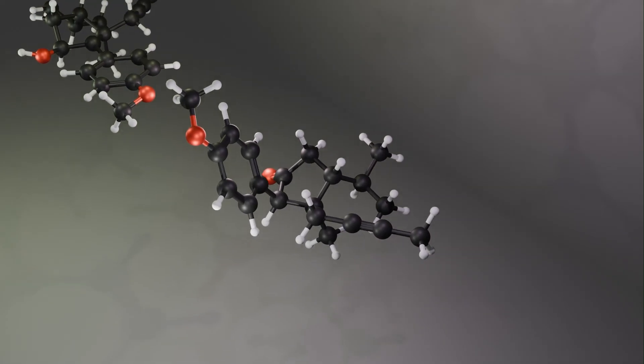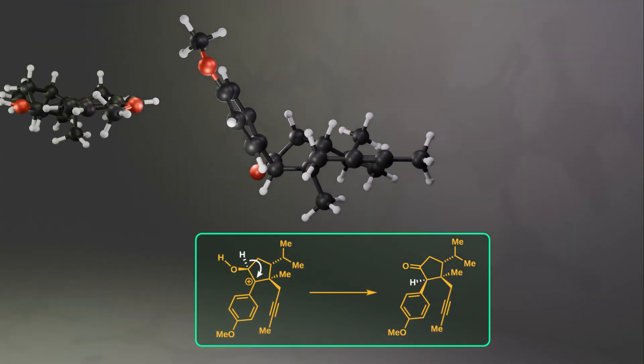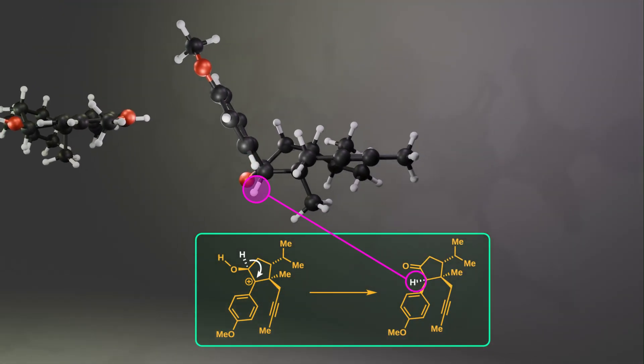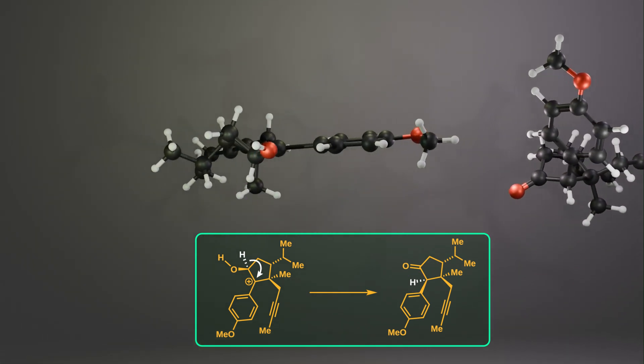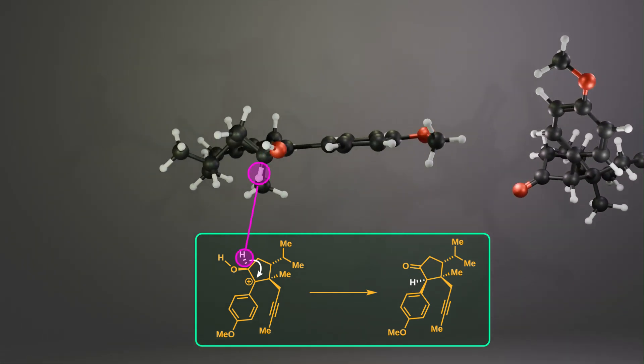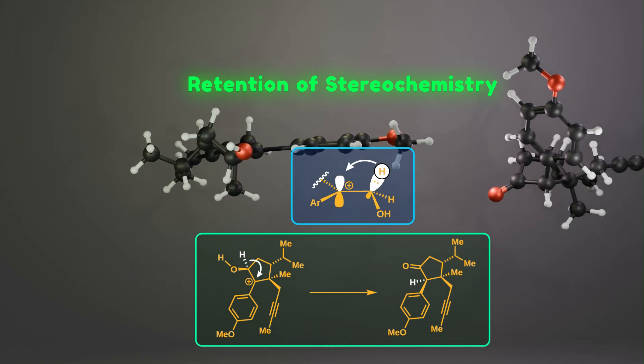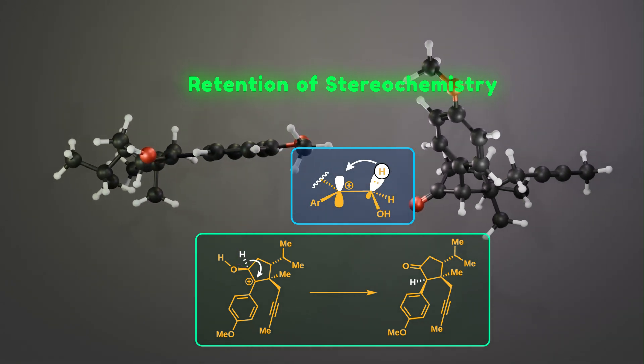The interesting point here is the stereochemistry of the hydrogen that's positioned below the plane. Before migration, it had the same orientation, so that means that the shift happens with retention of stereochemistry. From an orbital perspective, the upper lobe of the empty p orbital at the carbocationic center and the carbon-hydrogen bond are in the same phase. That's why the migration occurs with retention of stereochemistry.